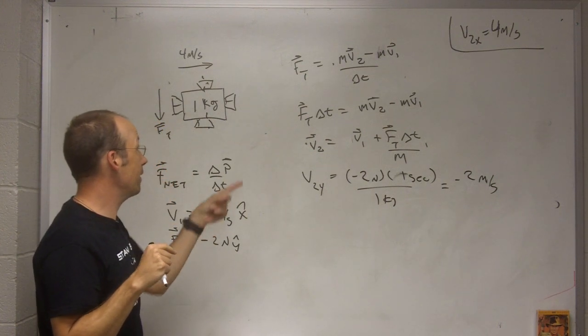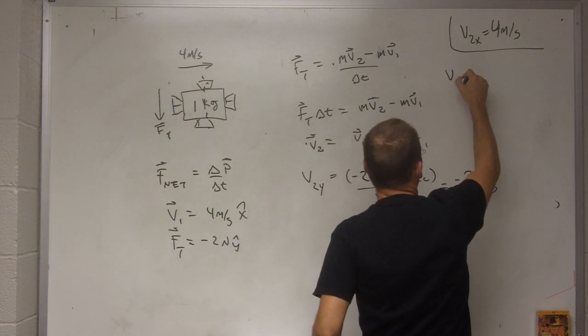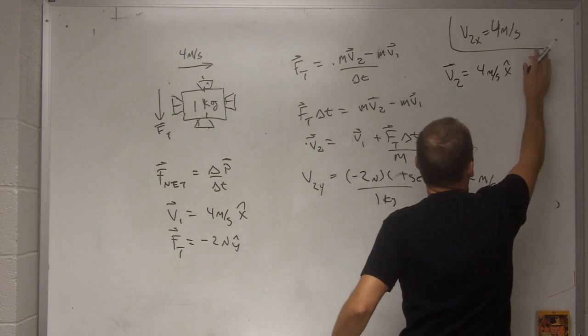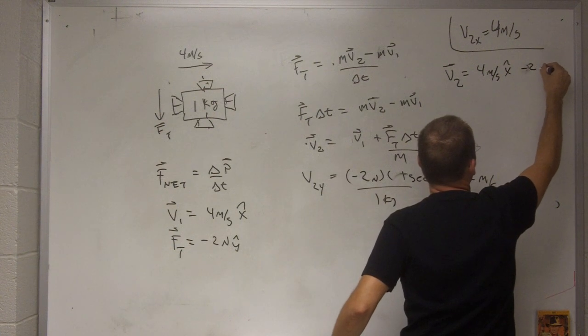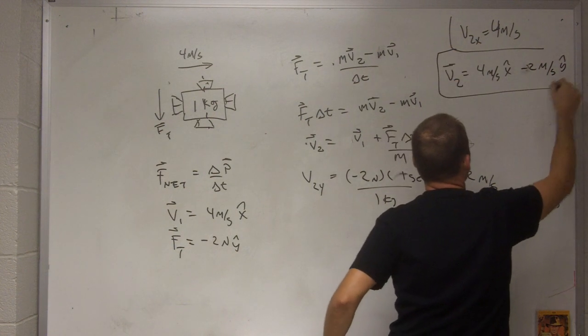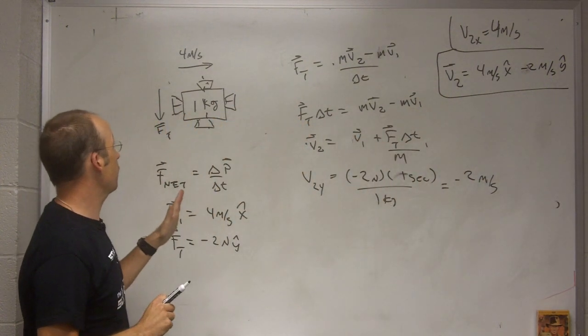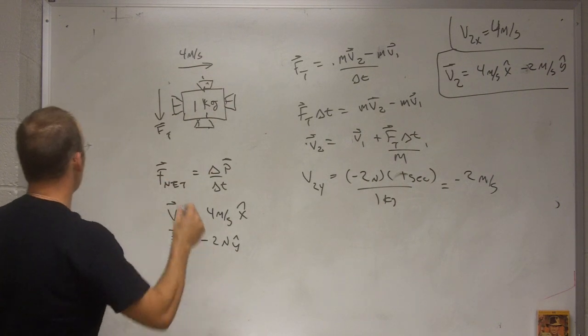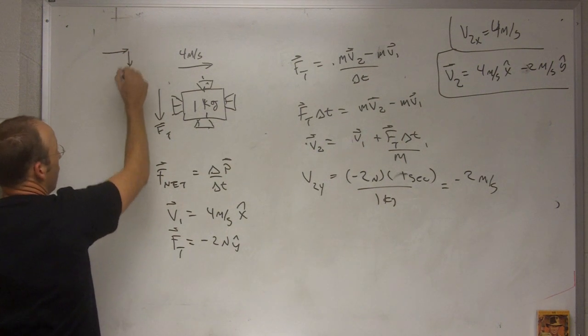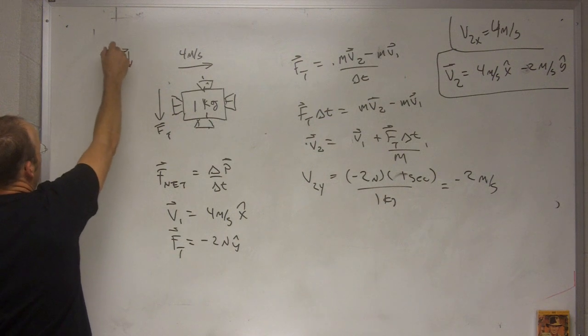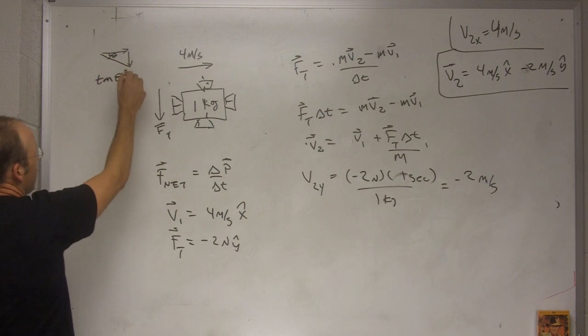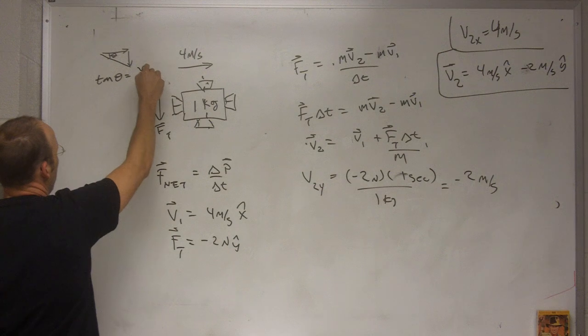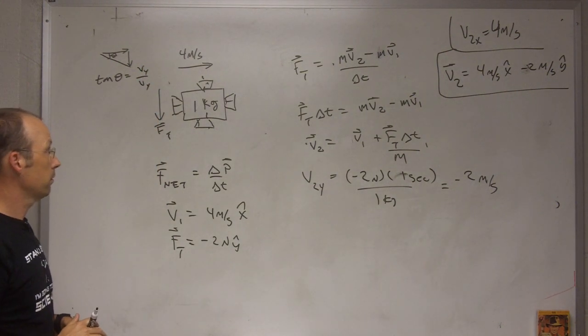So, putting that together with my x velocity, I have the final velocity v2. It's going to be 4 meters per second x hat minus 2 meters per second y hat. So that's how fast it's going after the 1 second thrust down. If I want to, I could find the direction for that. I'm not going to, but if I know it's going 4 meters per second that way, and 2 meters per second down that way, I can find that angle. Tangent of theta is going to be opposite over adjacent, so it's going to be vy over vx.